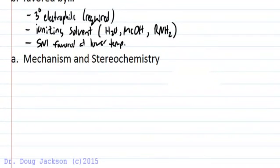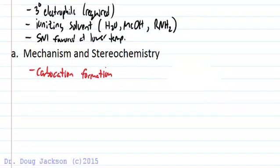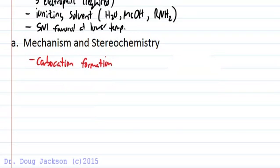Mechanistically we get carbocation formation and this makes it slower than the E2 and the SN2 processes. And so it makes it where strong bases favor E2, the tertiary cation or the tertiary position of the carbon prevents SN2.